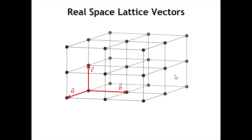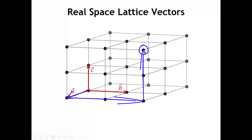Let's review the idea of a three-dimensional lattice, which, as we learned in earlier lectures, is really the defining characteristic of a crystal. In any three-dimensional lattice, we have an infinite array of lattice points, and all of those points are generated by linearly combining three lattice vectors A, B, and C, marked here with red arrows. For example, we can get to a particular point from the origin by taking 1 times vector A, plus 2 times lattice vector B, plus 2 times lattice vector C.